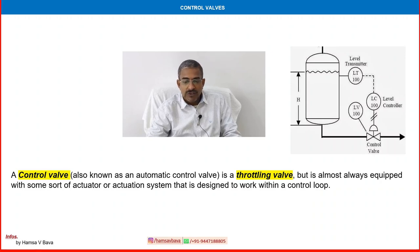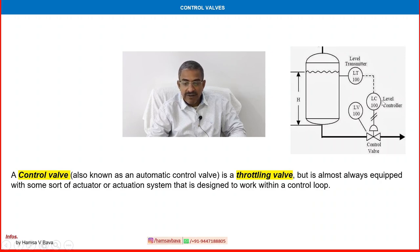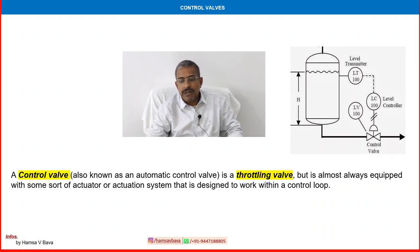Let us see how this valve works. Here you can see that a vessel is there and a level transmitter where we want to control the level of this particular vessel — or maybe it is pressure, temperature, flow, or whatever. A control valve is here at the bottom, connected with a controller LC and a transmitter LT. LV is the level control valve, LC is the level controller, and LT is the level transmitter. It is a control system — control valves are part of a control system.